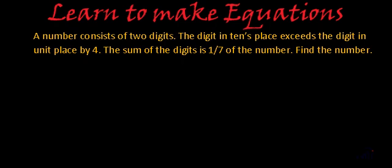The digit at tens place exceeds the digit in units place by 4. So if we have a number like AB, where A is the digit at tens place and B is the digit at units place, what will be this number? This number will be 10 times A plus B.